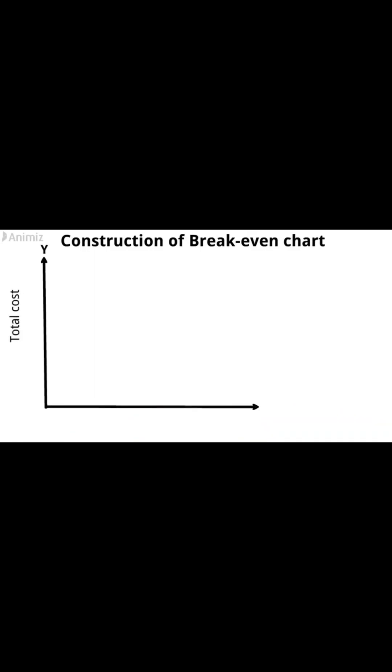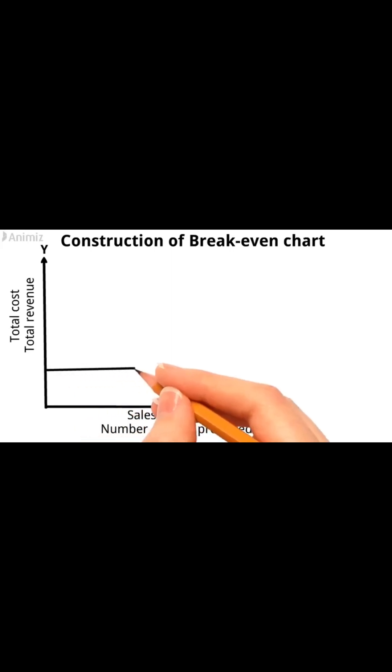Let's construct the breakeven chart. The breakeven chart consists of a y-axis representing total cost and total revenue, and an x-axis representing units of output, or sales volume, or number of units produced.